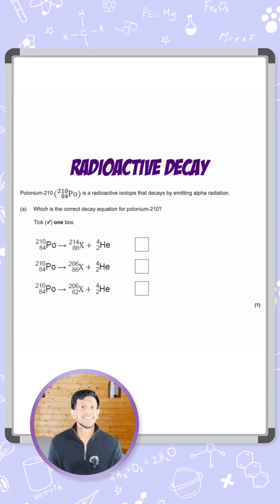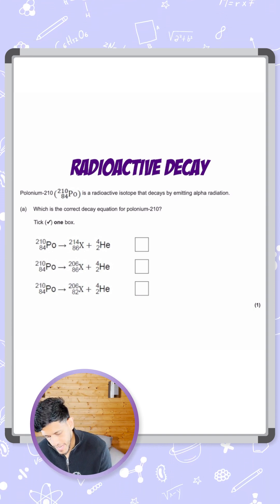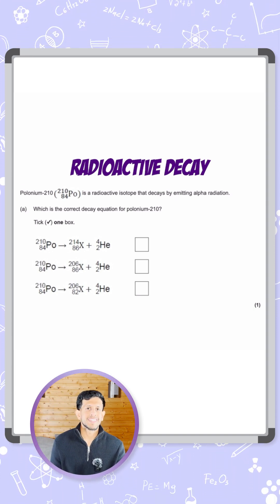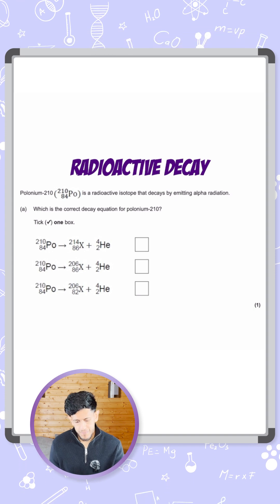It's a radioactive isotope that decays by releasing alpha radiation, and it says which is the correct decay equation for polonium-210. Tick one of the boxes.